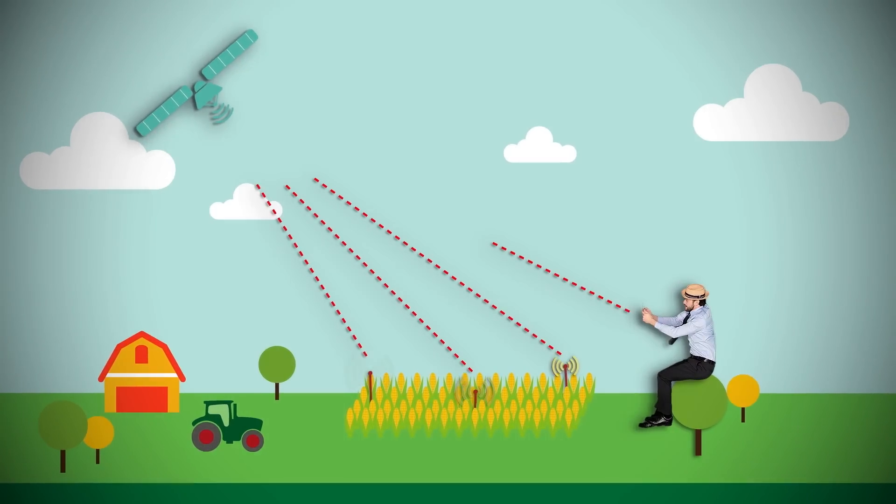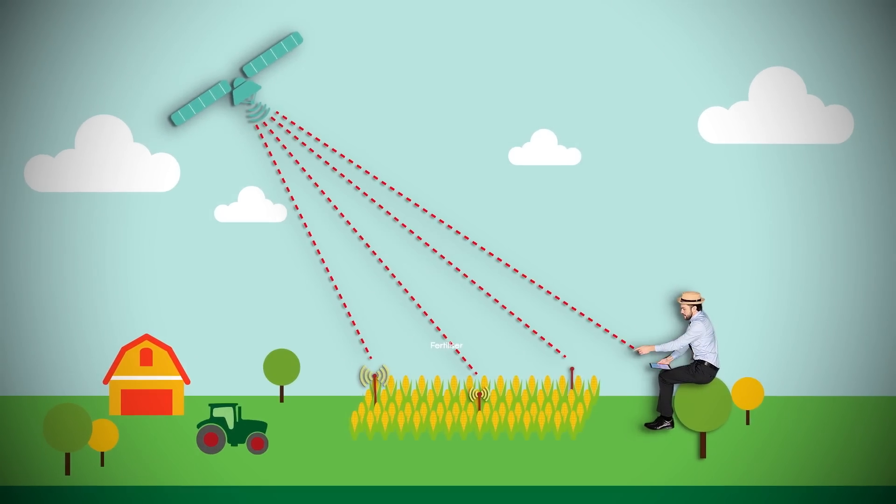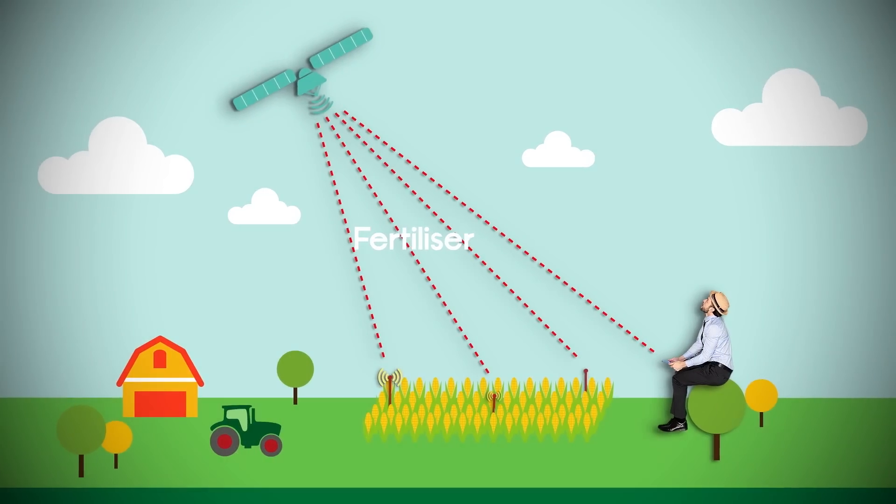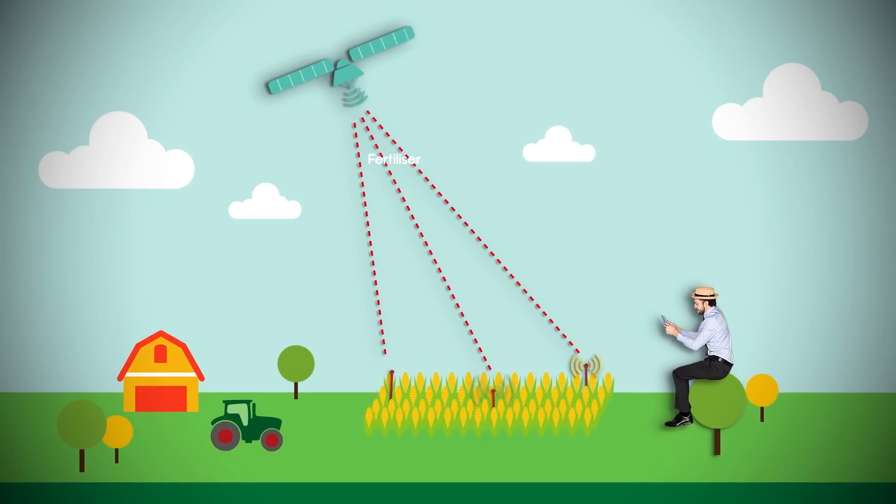Imagine you're a farmer and your crops tell you exactly when to water them and how much fertilizer they need. They can even order supplies on their own if necessary.